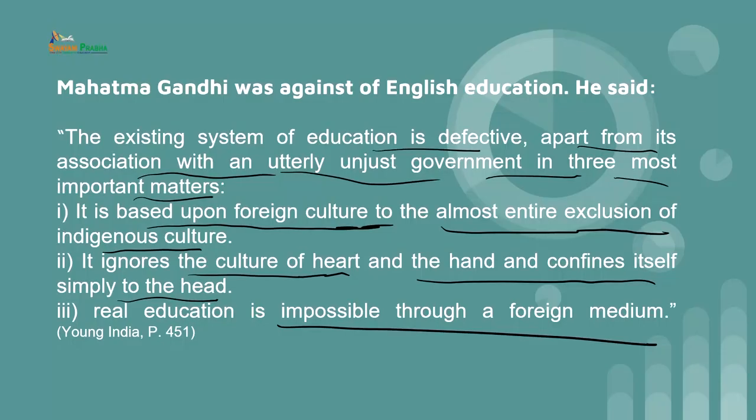Gandhi said these statements because he wanted people to know that we are connected with each other through the medium of native language. Native language makes you emotionally connected, and it played a great role at the time of independence — slogans were mainly used in native language because native language emotionally captures your attention. Therefore, Mahatma Gandhi wanted to make people realize that our ultimate goal is to make people aware about education through the native language, and it is not necessary to acquire education through the medium of English.